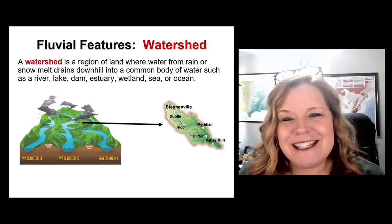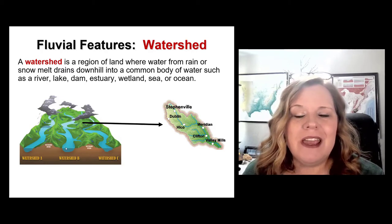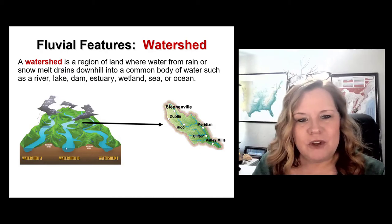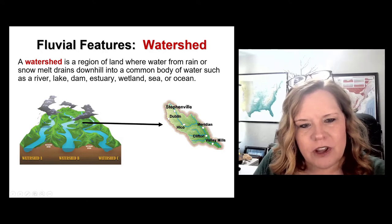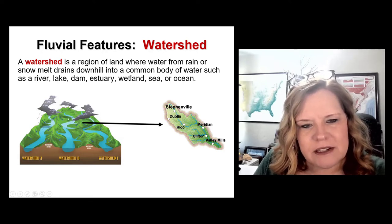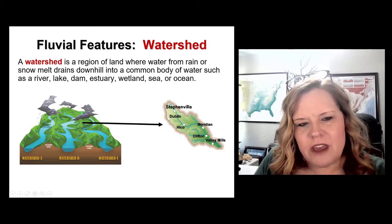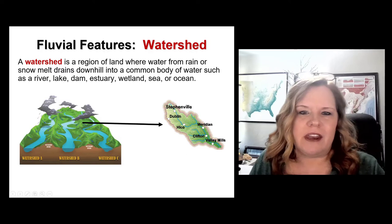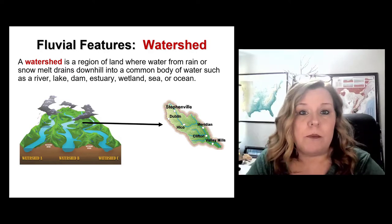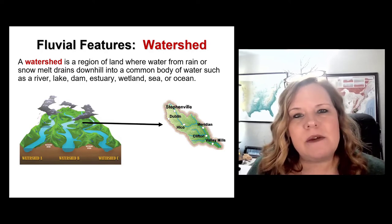Let's move into talking about watersheds. A watershed is — looking at this diagram — where all the water when it rains drains into a middle section from two high points. Water at one high point drains one way; if it's on the other side it goes into another watershed. Basically, a watershed is an area where water or snowmelt drains into a common body such as a river, lake, dam, estuary, ocean, wetlands, or sea.